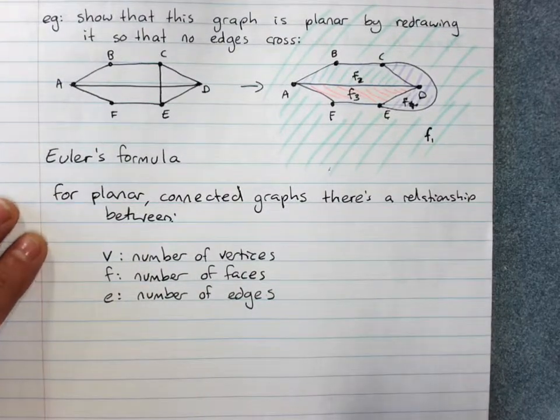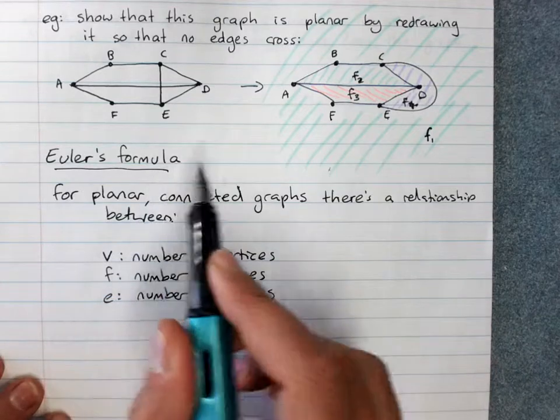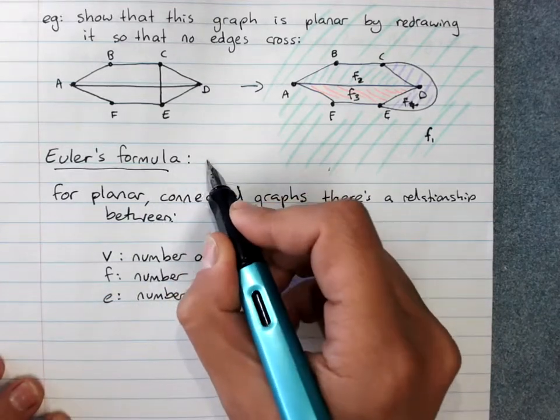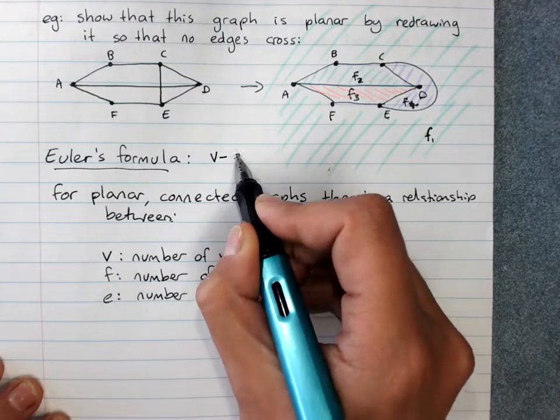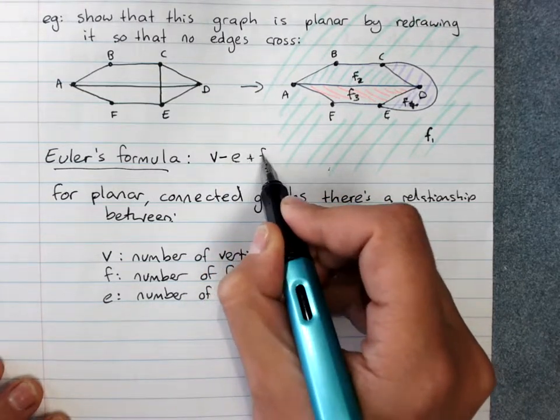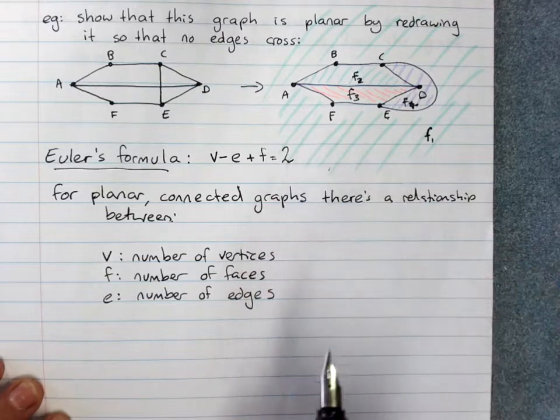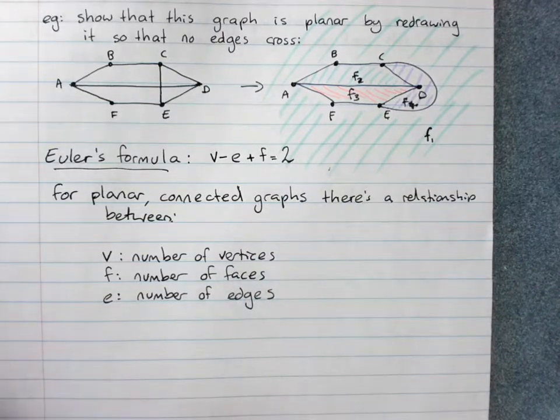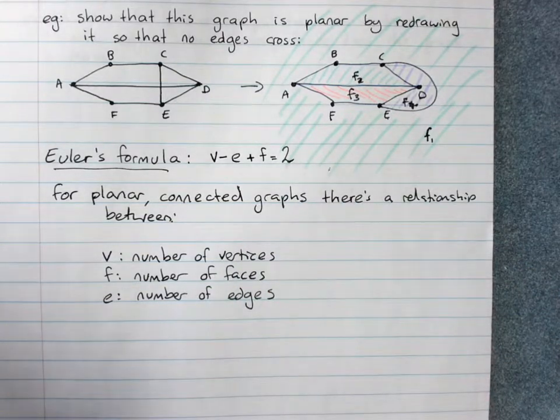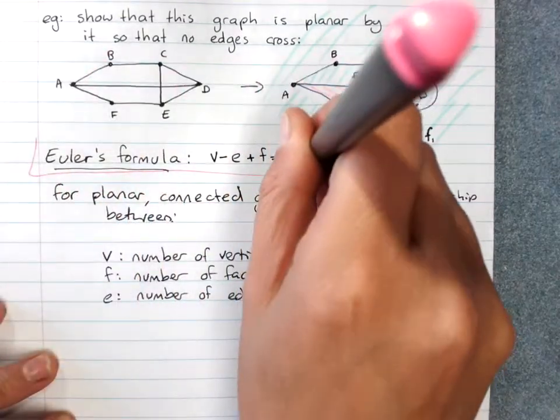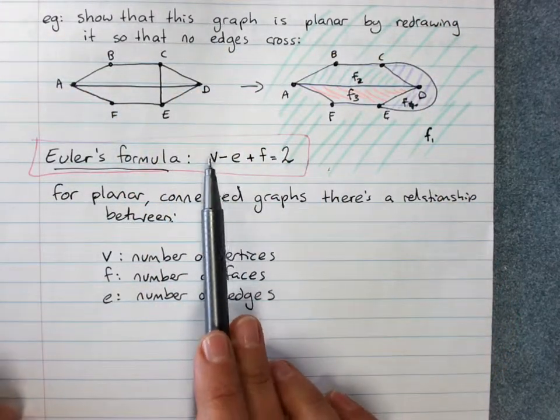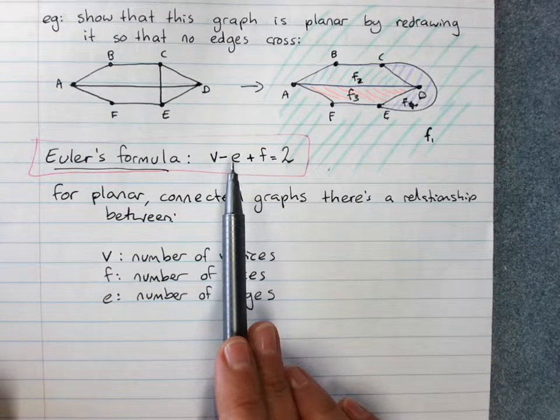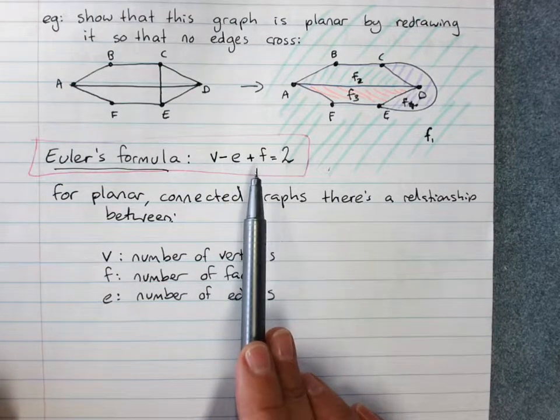And the relationship, which is Euler's formula, is V minus E plus F equals 2. That is, let me put that in an important box. The number of vertices minus the number of edges plus the number of faces is 2.